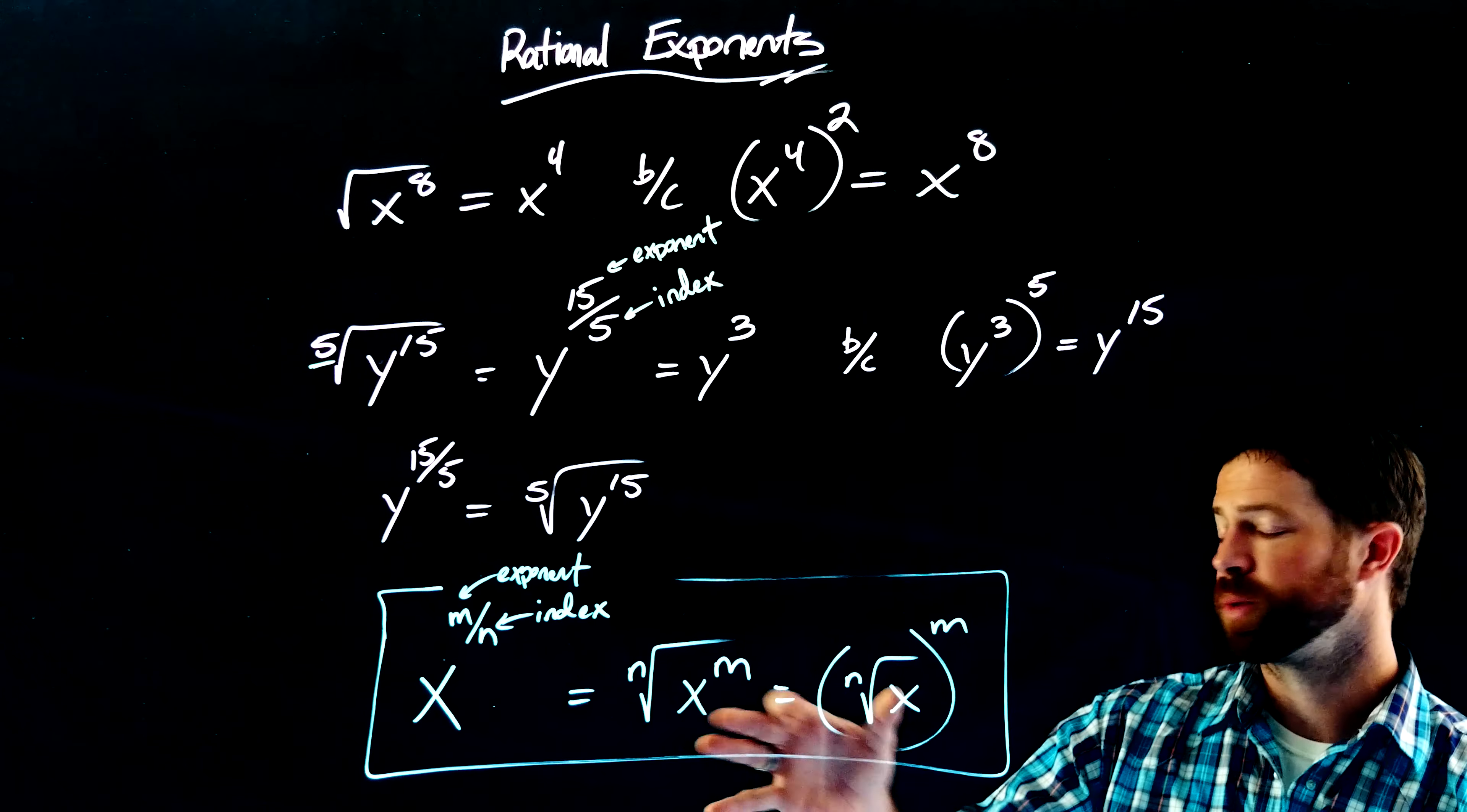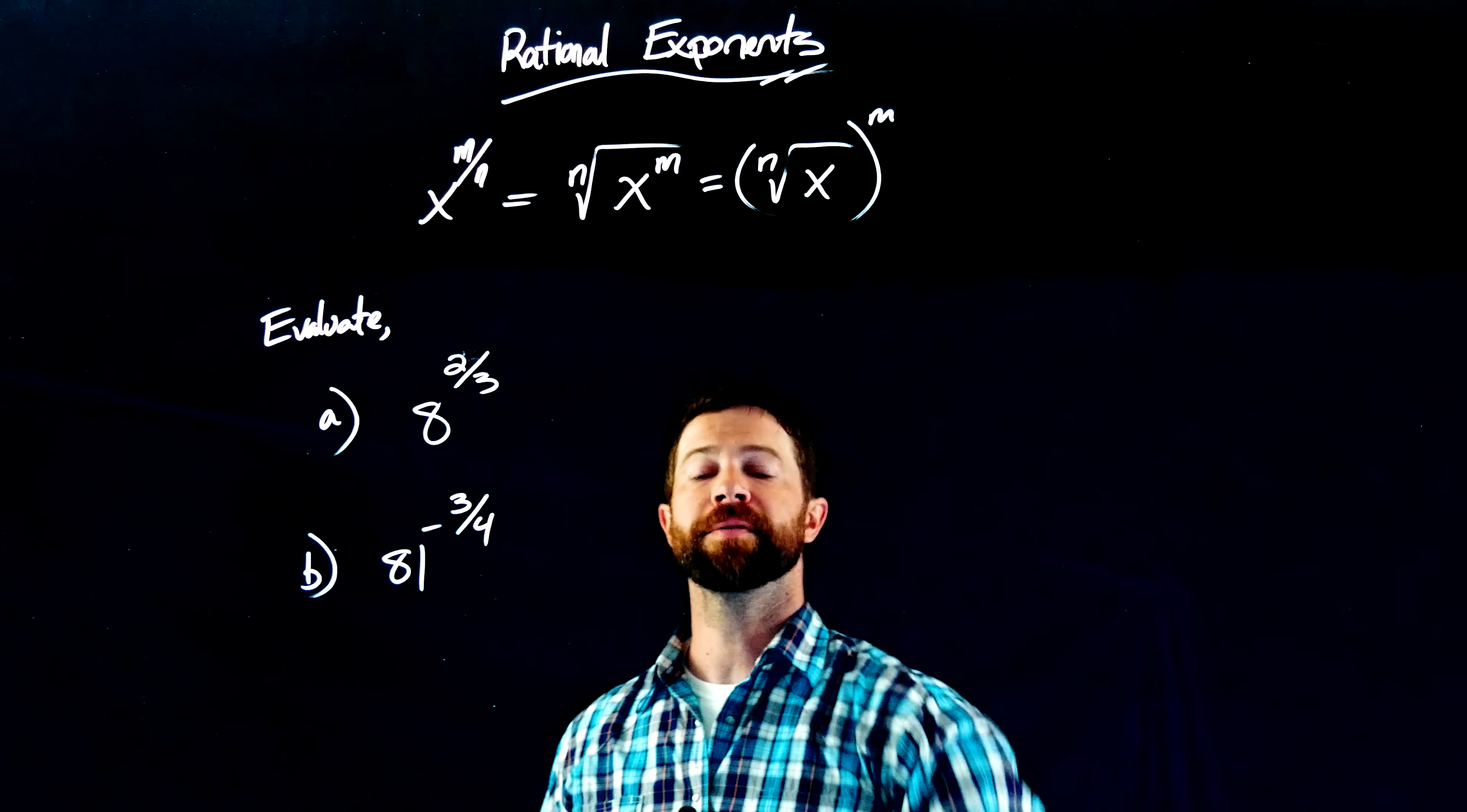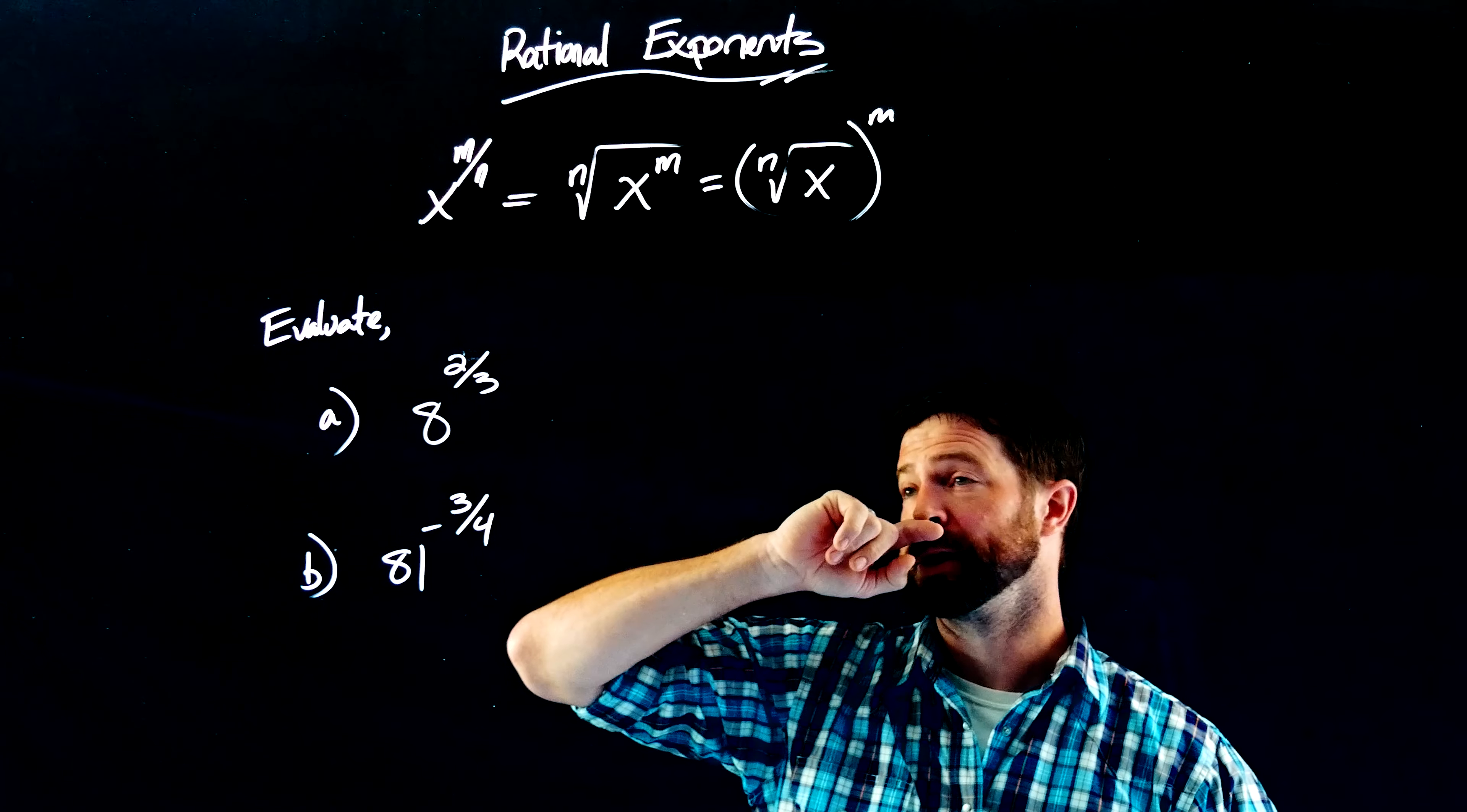And again, the order with which I do that will not matter. All right, now we've established a definition of fractional or rational exponents. If we see a fractional exponent, the numerator is an exponent when put in radical form, and the denominator is the index of the radical. It does not matter the order with which I put those in.